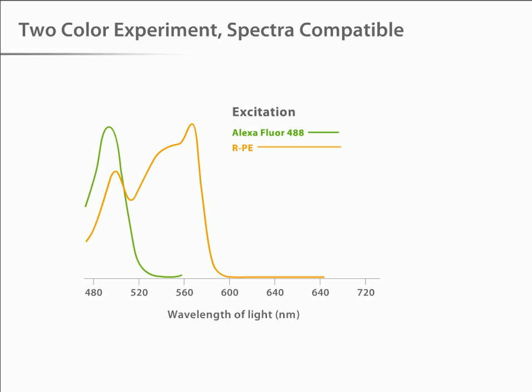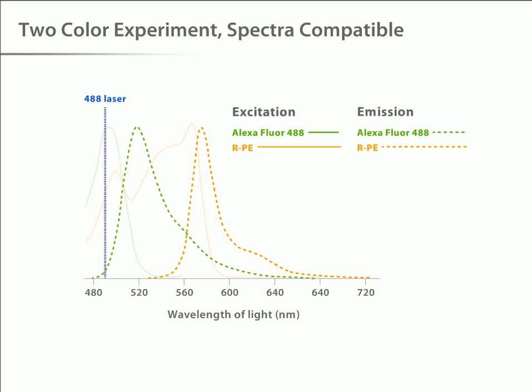What if we want to do a two-color experiment? We need to look at the spectra of the two fluorophores to see if they are compatible. Alexa Fluor 488 and Ficoerythrin, or RPE, are commonly used together. For these two fluorophores, 488 nanometer light is an efficient excitation source. When excited with 488 nanometer light, you can see that the emission peaks for these two dyes are far enough apart so that discrete emission data can be collected. Compatible dyes such as these allow scientists to easily detect two colors from a single laser.